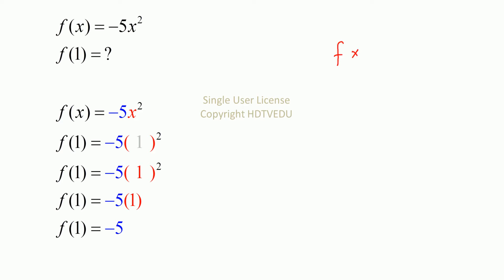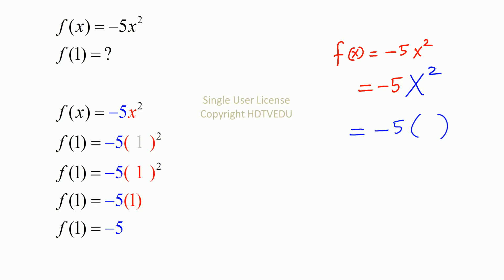Now we are asked for the value of the function at x equals 1. Our f of x equals negative 5 x squared. We rewrite it to avoid confusion as negative 5 x squared. At the position of the x, we substitute 1. What is 1 squared? It is 1. So this is negative 5 times 1, which is negative 5.